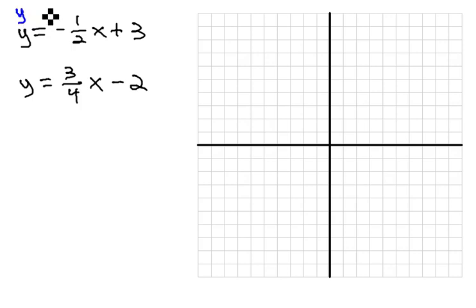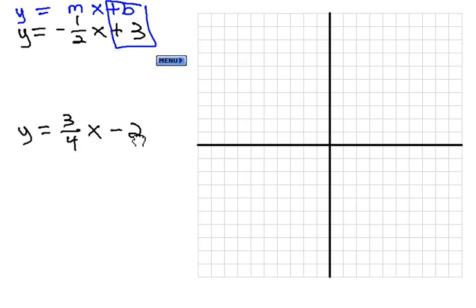You may recall we have slope intercept form, that's y equals mx plus b. The important numbers we want to pull off here are that b, the y intercept, is 3. Let me move this other equation out of the way. The y intercept is 3. That's where the graph is going to cross the y axis at 3.